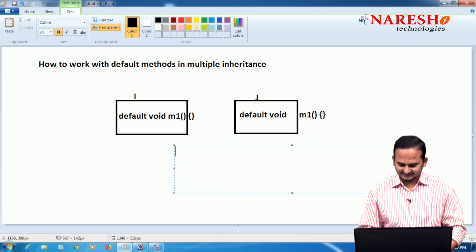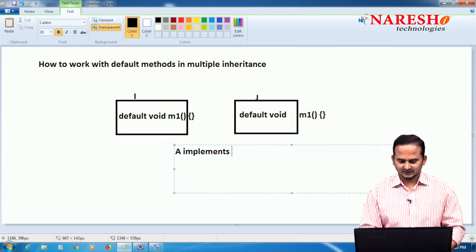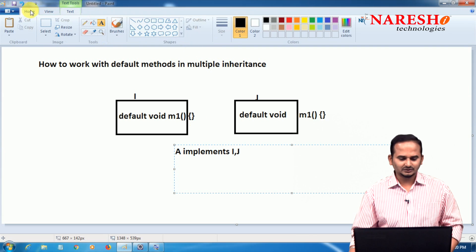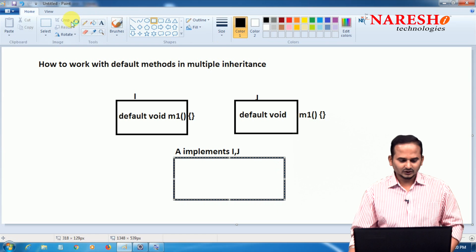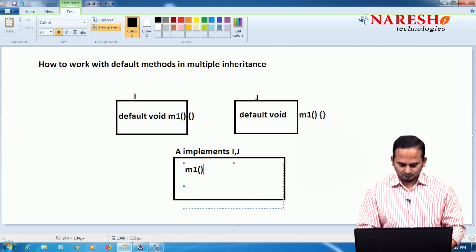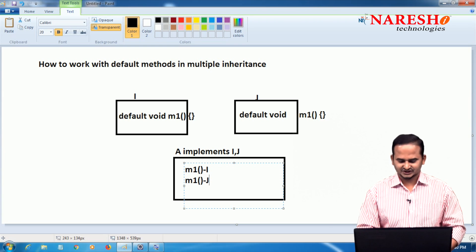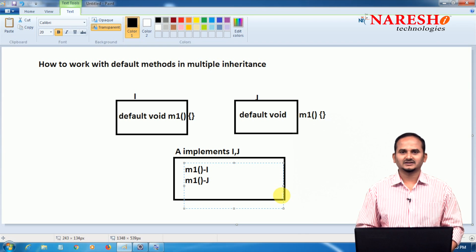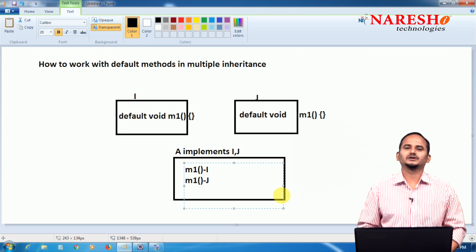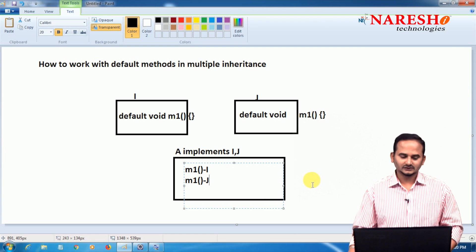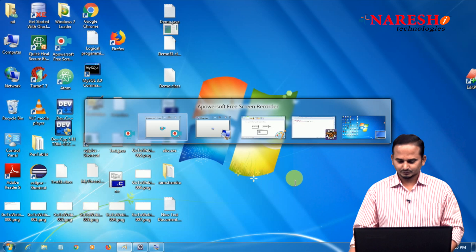Now, there is a class like A which implements I, J. This is the syntax of multiple inheritance through interface. Now what happens? Here two methods we will get in A. One is m1 method from I, another one is m1 method from J. Then two logics are available. If you are calling any m1 method from A class object, it will show an error. Then how can we overcome this problem? Let me show you this one programmatically.